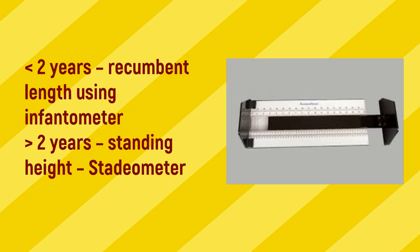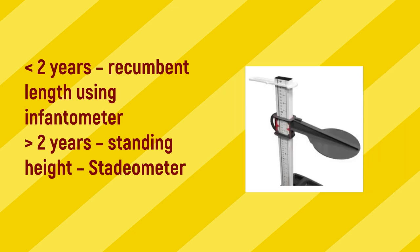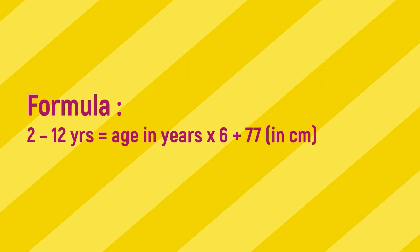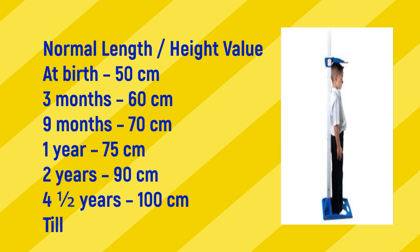Recumbent length is measured using an infantometer for children less than 2 years. Standing height is measured by stadiometer for more than 2 years. Formula for height (2 to 12 years): age in years × 6 + 77 cm. Normal length/height values: birth 50 cm, 3 months 60 cm, 9 months 70 cm, 1 year 75 cm, 2 years 90 cm, 4.5 years 100 cm, then 5 cm per year until age 10.